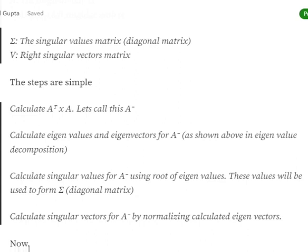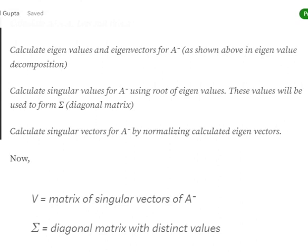Next, we calculate the singular values for A-dash using the eigenvalues, since singular values are simply the square root of eigenvalues. We place those singular values on the diagonal of our matrix, forming Sigma. So once we calculate singular values, we obtain Sigma. Then we calculate the singular vectors for A-dash by normalizing the eigenvectors.